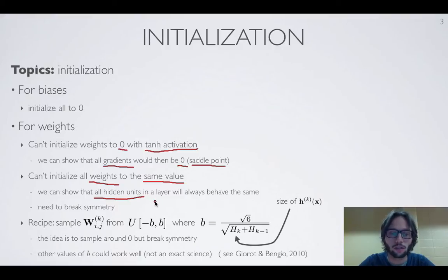And that's because, in that case, we can show that all hidden units in all layers will always behave the same. All hidden units will compute exactly the same activation function. And essentially all units, their connections with the layer below will always stay the same. And so intuitively, we want a neural net where we have different hidden units that do different things. And so we need to break the initial symmetry that would have enforced if we had used the same identical value for all weights of all units.